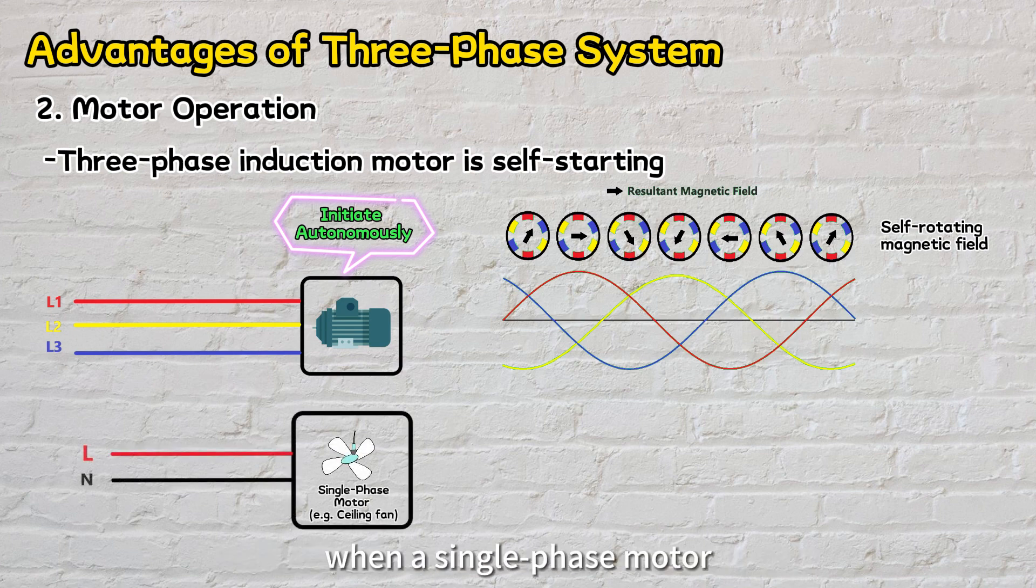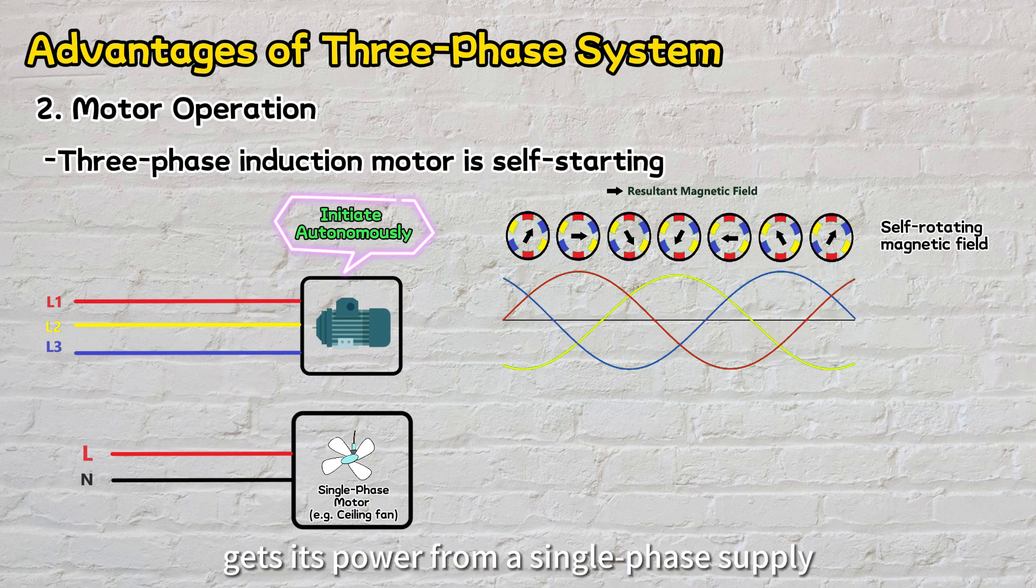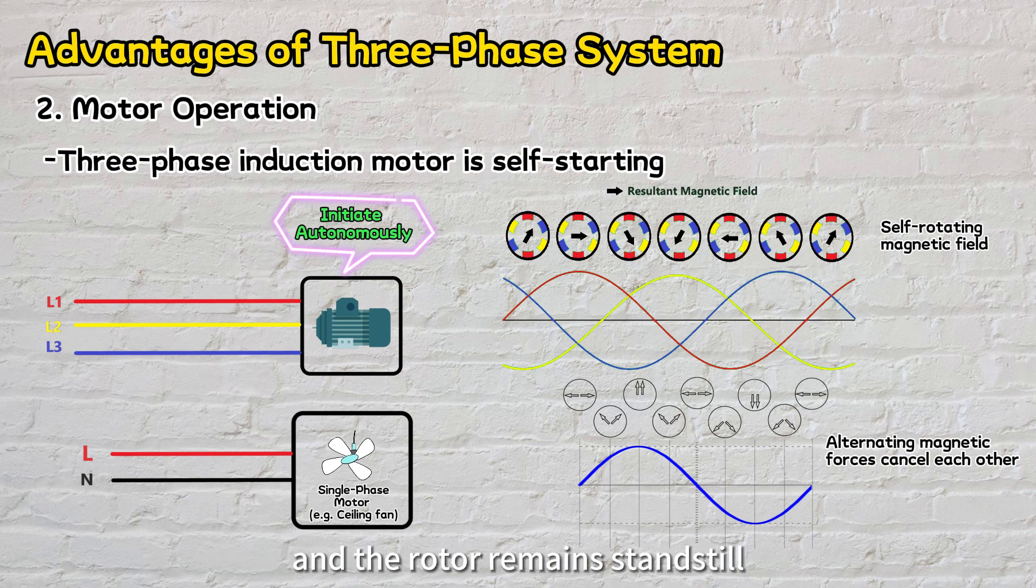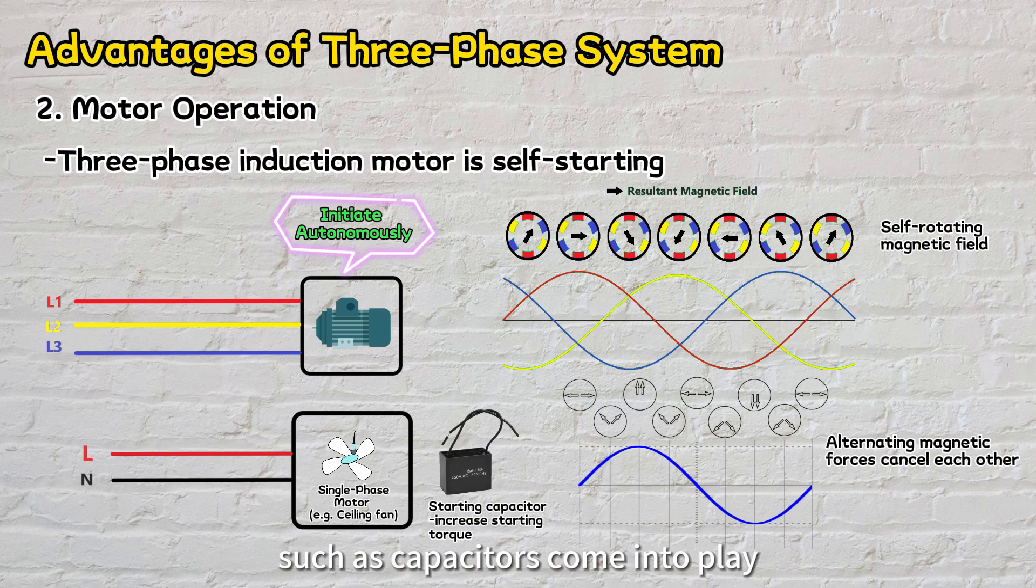In contrast, when a single-phase motor gets its power from a single-phase supply, the alternating magnetic forces cancel out each other and the rotor remains standstill. This is where extra components such as capacitors come into play, increasing the starting torque to kick-start its rotation.